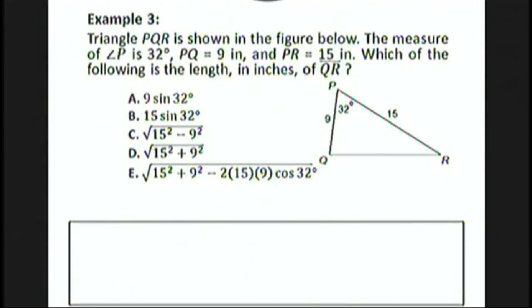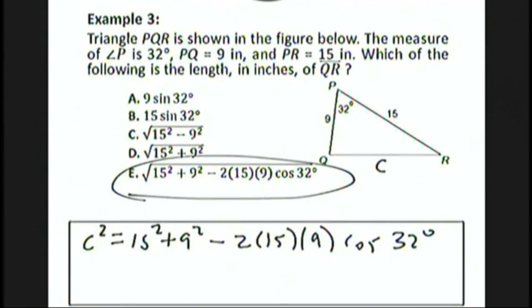Let's do an example. Triangle PQR is shown in the figure below. The measure of angle P is 32 degrees, PQ equals 9 inches, and PR equals 15 inches. Which of the following is the length in inches of QR? Let's label QR with a c. By the law of cosines, we have c² = 15² + 9² - 2(15)(9)cos 32°. Taking the square root of each side gives us choice E.